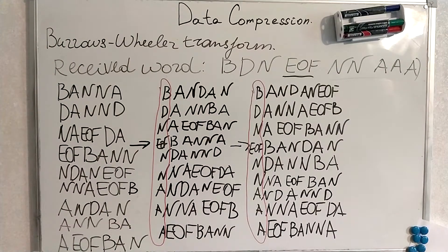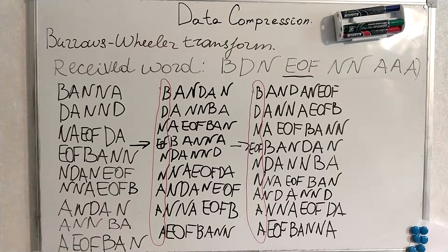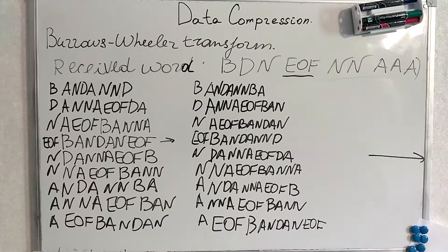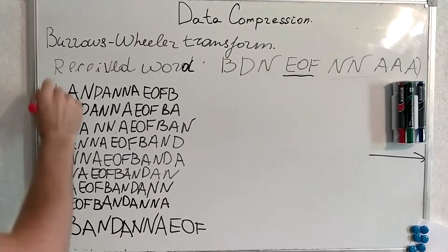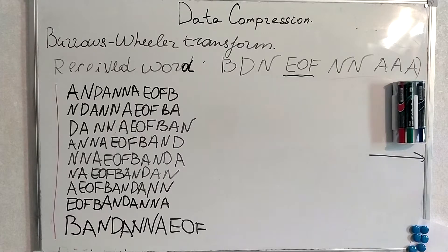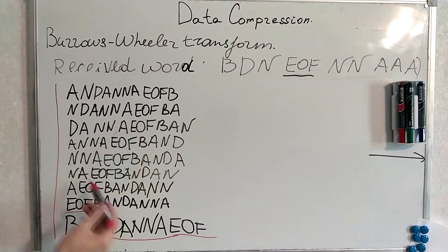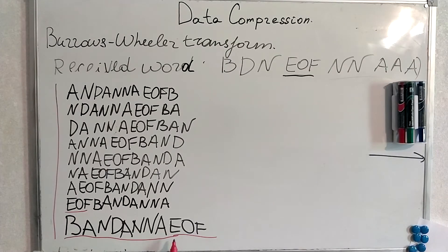And we will do that until we produce words of the certain length and more steps and I will write the final sequence. And on the final step we produce sequence like that. And we know that our word can only end on end of file. Right? And thus we just choose bandanne end of file. Not end of file bandanne for example or something incomprehensible here. We choose bandanne end of file because our word ends on end of file. And that's it.